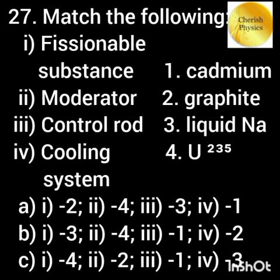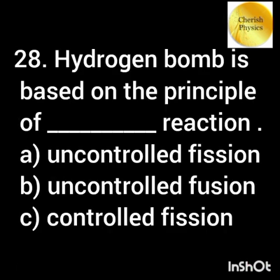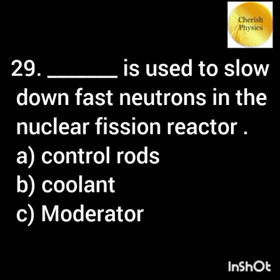Match the following with their corresponding examples. The hydrogen bomb is based on the principle of the fusion reaction. Heavy water or graphite is used to slow down fast neutrons in the nuclear fission reactor.